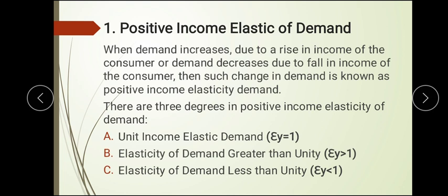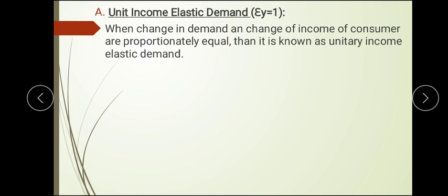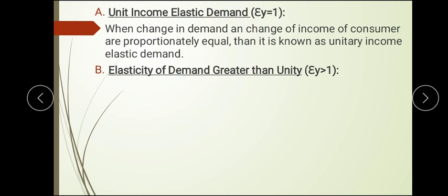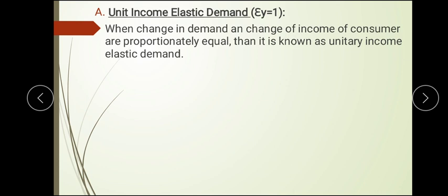Unit income elasticity means the change in income and the change in demand are at the same proportionate level. For example, if income rises by five percent and the demand for a particular product also rises by five percent, then five divided by five equals one — this is called unit income elasticity of demand.